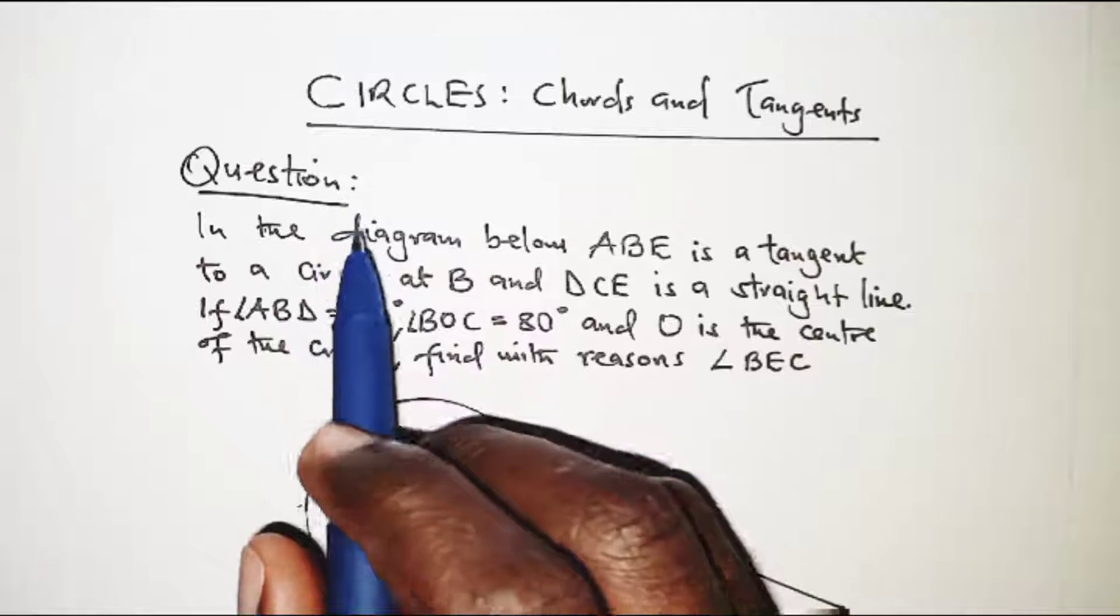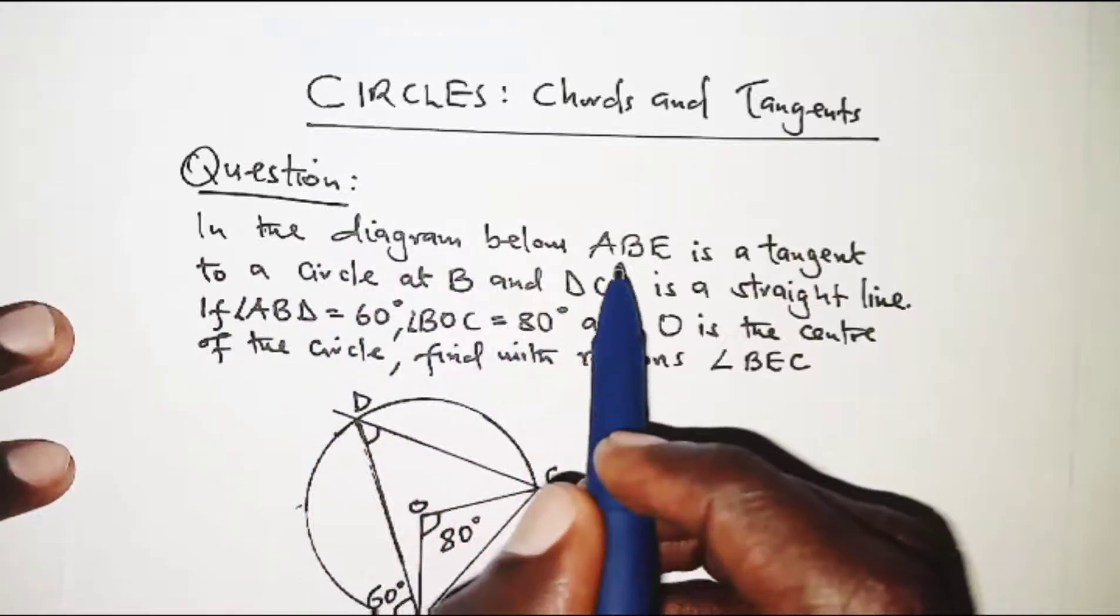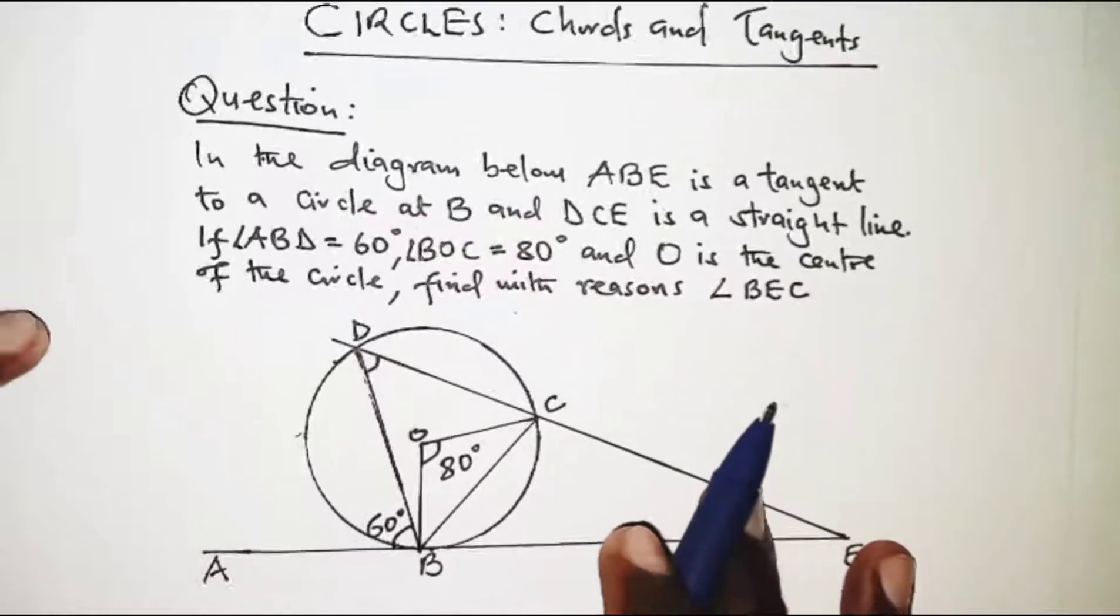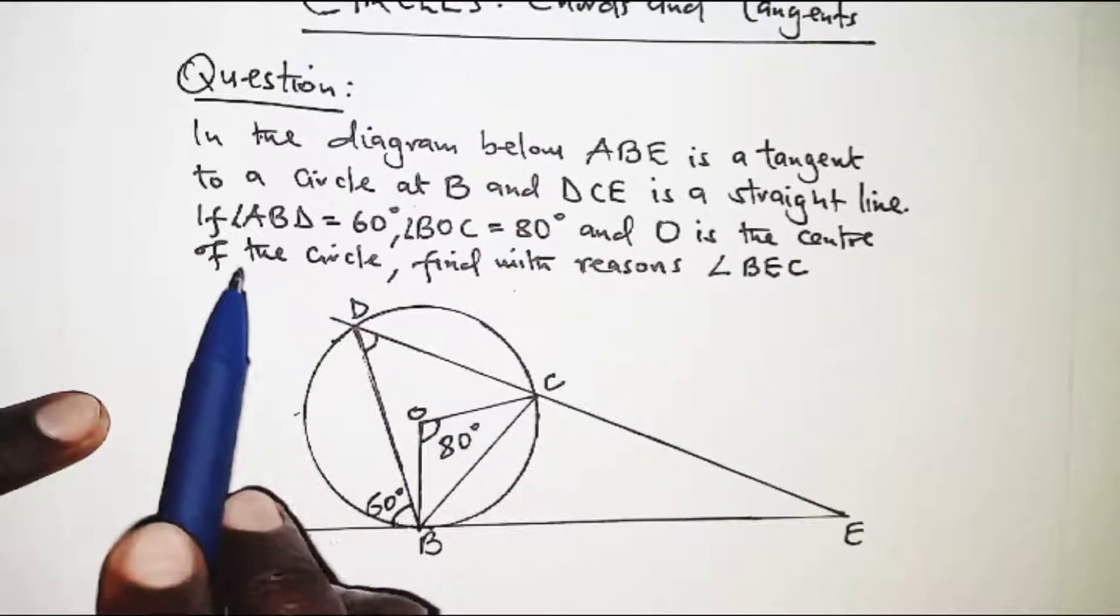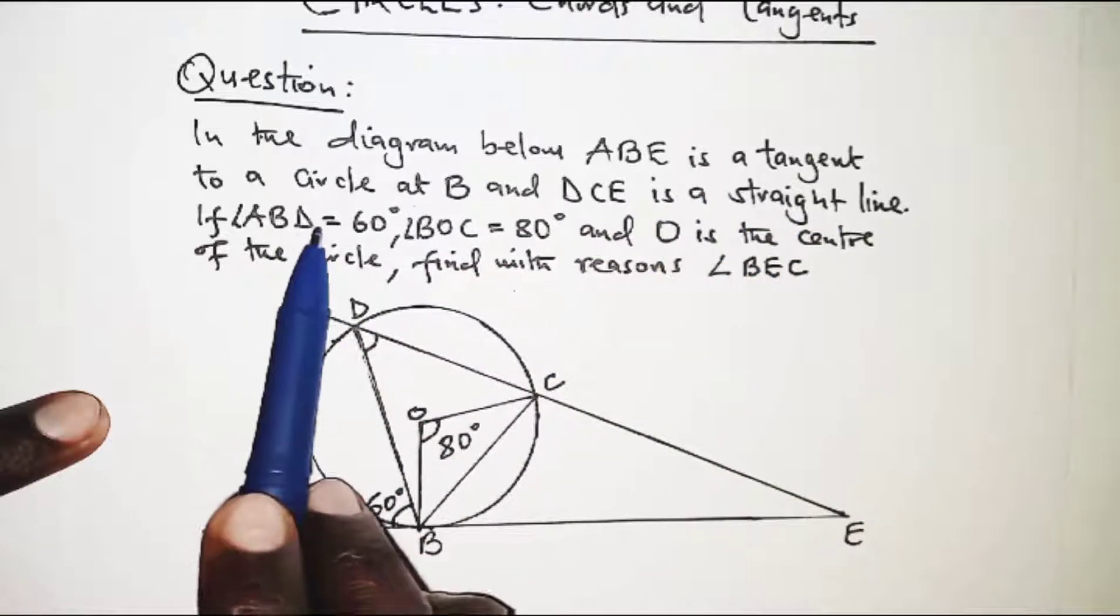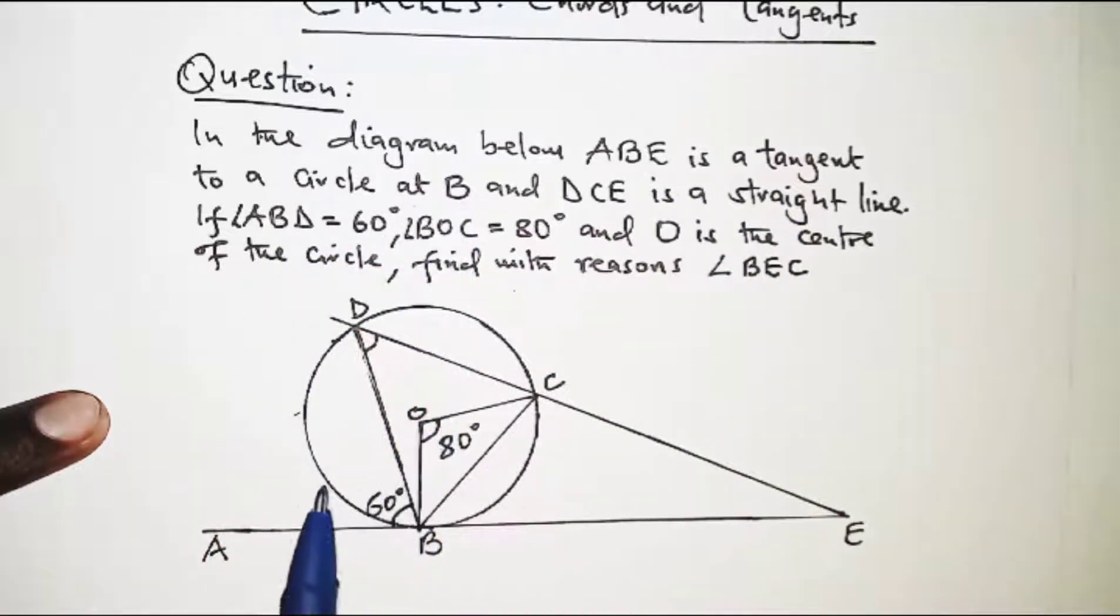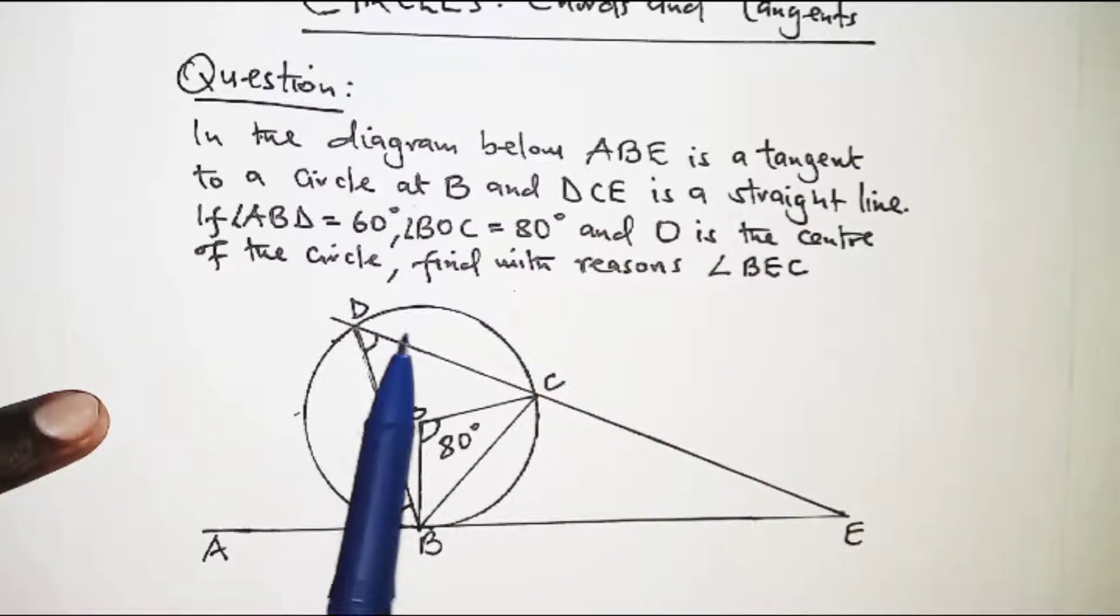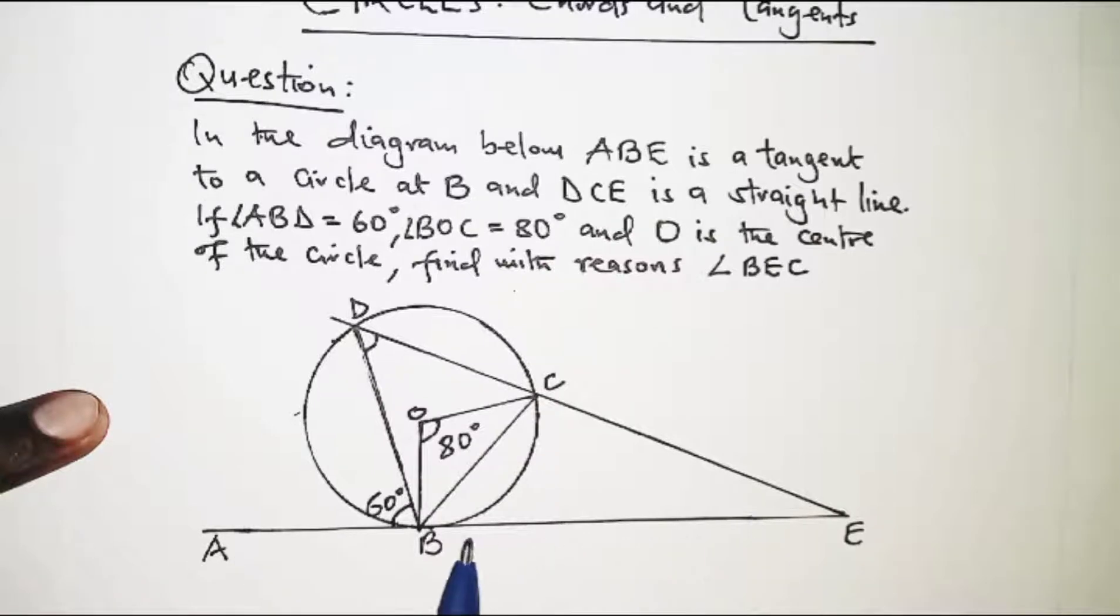We have a question. In the diagram below, ABE is a tangent to a circle at B, and DCE is a straight line. ABE is a tangent to the circle at point B.